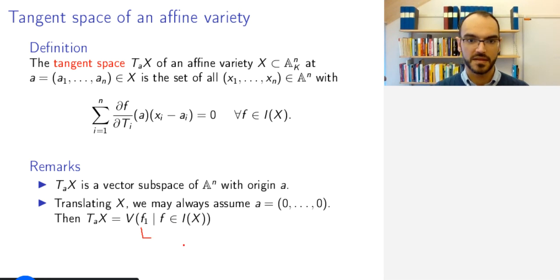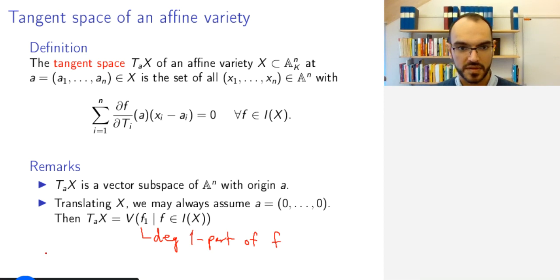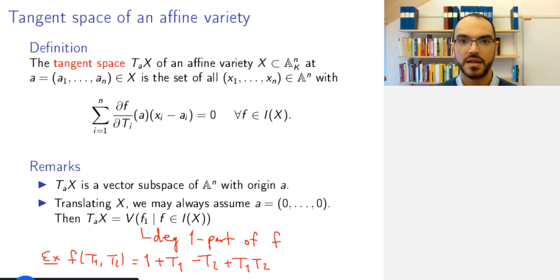Namely, the tangent space is the vanishing set of f_1 for all f in the vanishing ideal. Remember, f_1, this is the homogeneous part of degree 1. So, this is the degree 1 part of f. And by degree, I mean total degree. And so, let's take an example. If f of (t1, t2) is 1 plus t1 minus t2 plus t1 t2, then the degree 1 part is this part.